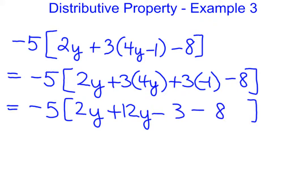You'll now notice we have some like terms inside the bracket. It's going to be to our advantage to put those together right now. And so we have negative 5 times, well, what's 2y plus 12y? That's 14y. What's negative 3 minus 8? That's negative 11.